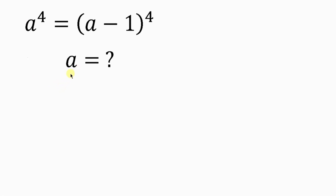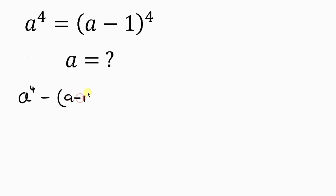Let's solve for all values of a given that a to the 4th is equal to a minus 1 all raised to the 4th. Our first step will be to bring a minus 1 all raised to the 4th to the left. So we have a to the 4th minus a minus 1 all raised to the 4th equal to 0.